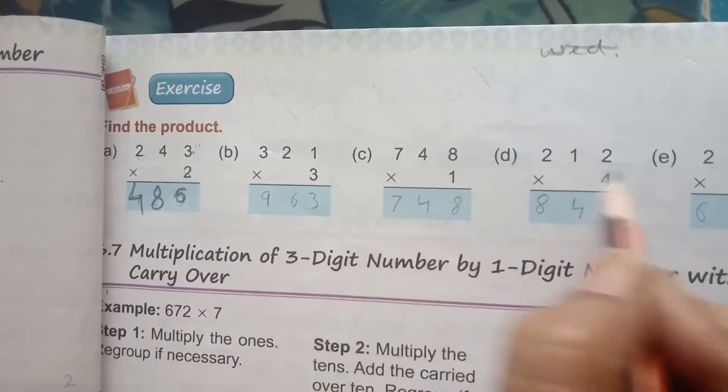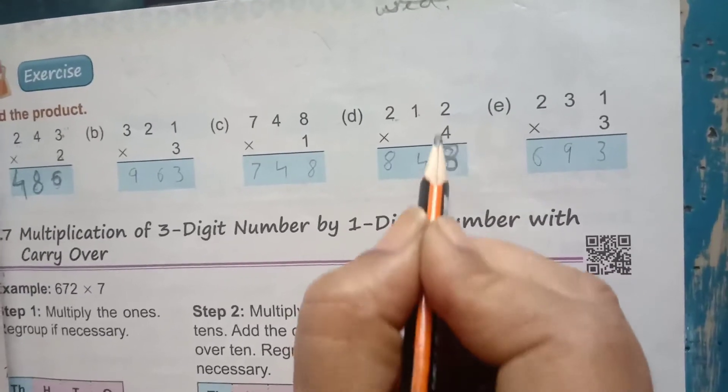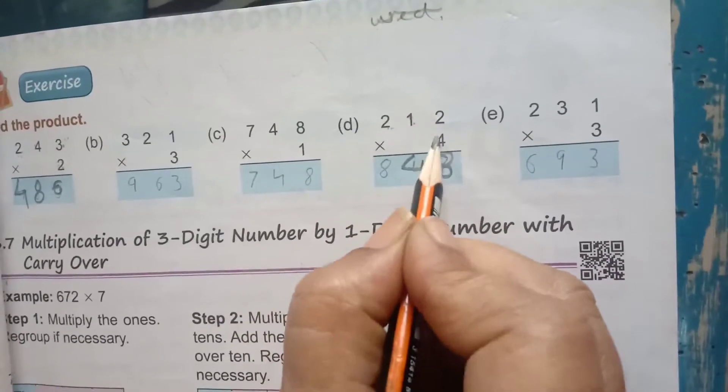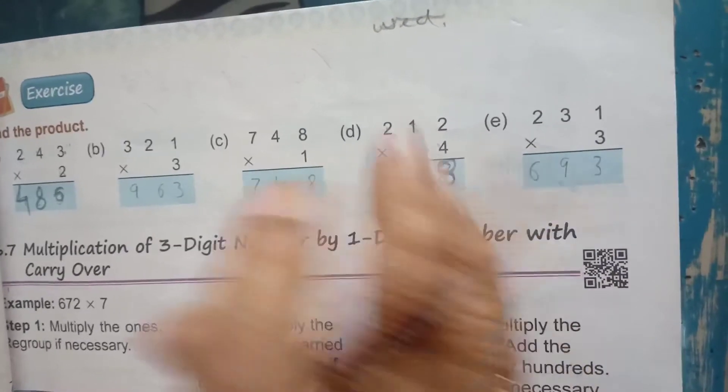Now, we will solve this. 212 into 4. 4 twos are 8. 4 ones are 4. 4 twos are 8. These sums, you have to solve in your notebook.